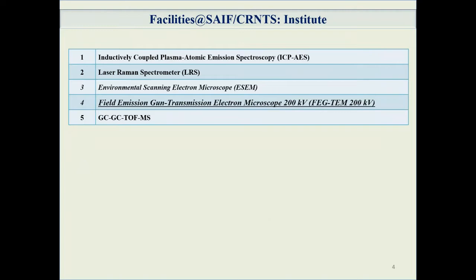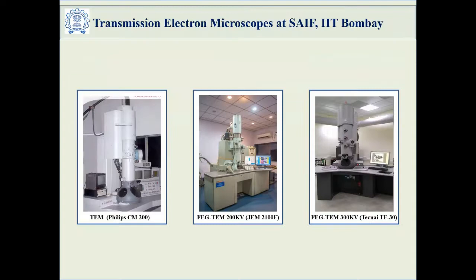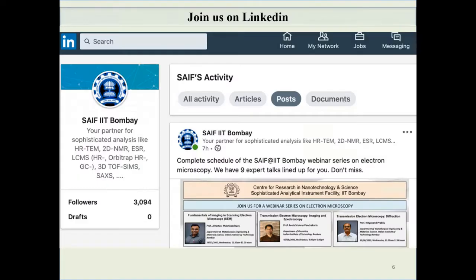The current slide shows instruments under the central facility funded by IIT Bombay. Today we highlight three transmission electron microscopes: one conventional TEM and two field emission gun-based instruments with different analytical capabilities. The 200 kV FEG-TEM has EDS attachment, and the 300 kV FEG-TEM has both EDS and EELS — all in-house at SAFE CRNTS.